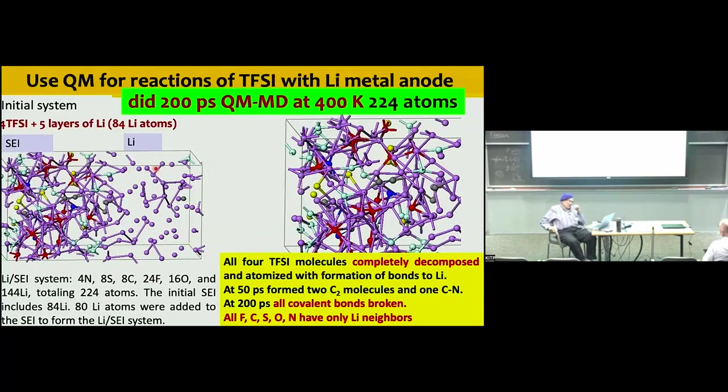The size of the problem we have to deal with here is maybe 30 to 100,000 atoms — we can't do quantum mechanics with that many atoms. So what we do first is quantum mechanics: in this case the anion of the system plus the lithium metal electrode, doing quantum mechanics at about 400 Kelvin for about 200 picoseconds. It's a long quantum mechanics run — it takes a week or so.